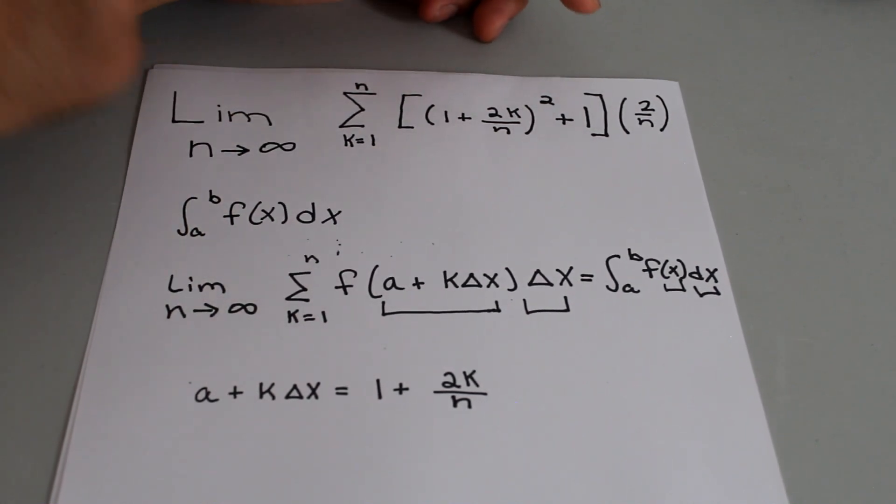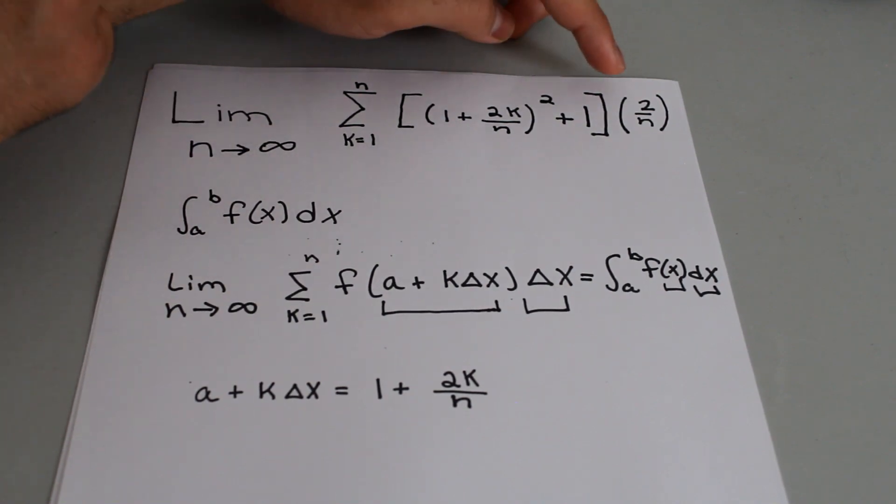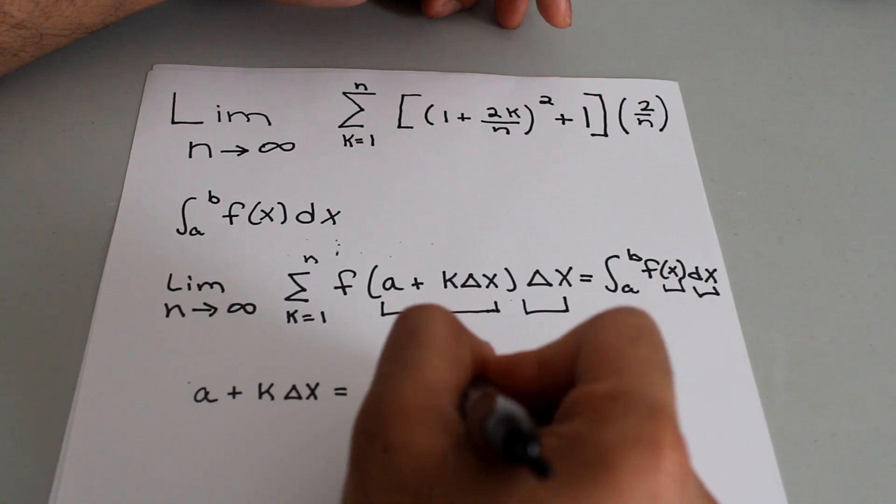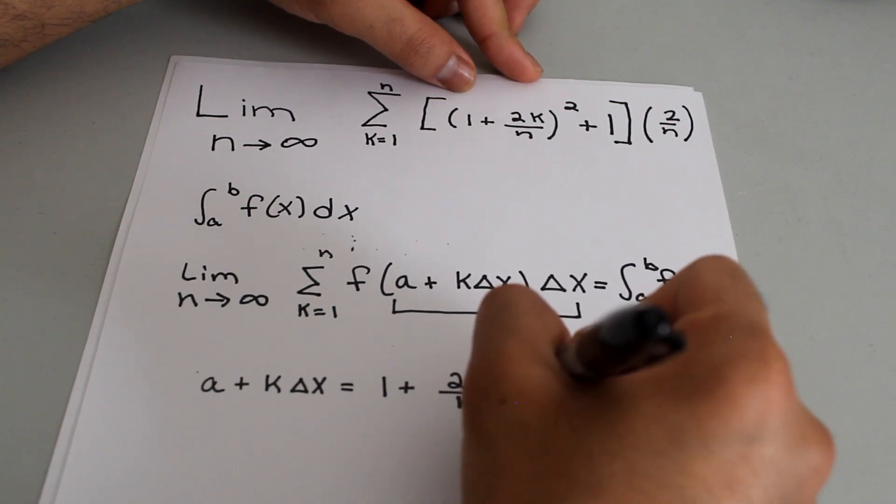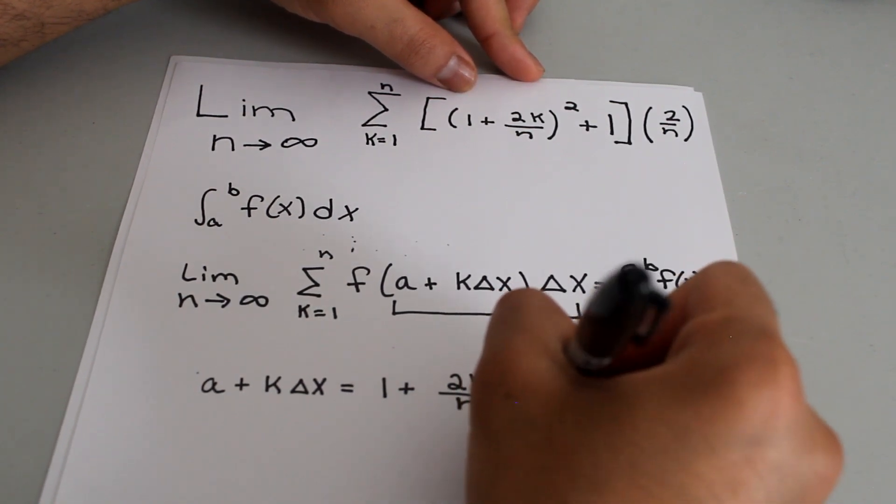So if you look on the outside of this bracket we see we have 2 over n and we have 2 times k over n. So that means we can also write that as 2 over n times k.